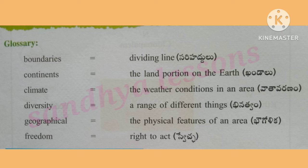Boundaries: Dividing Line. Continents: the land portion on the Earth. Climate: the weather conditions in an area. Diversity: a range of different things. Geographical: the physical features of an area. Freedom: right to act.